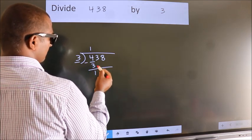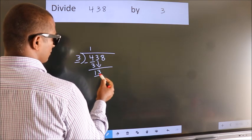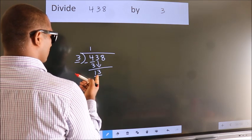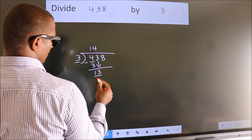After this, bring down the beside number. So, 3 down. So, 13. A number close to 13 in the 3 table is 3 fours, 12.